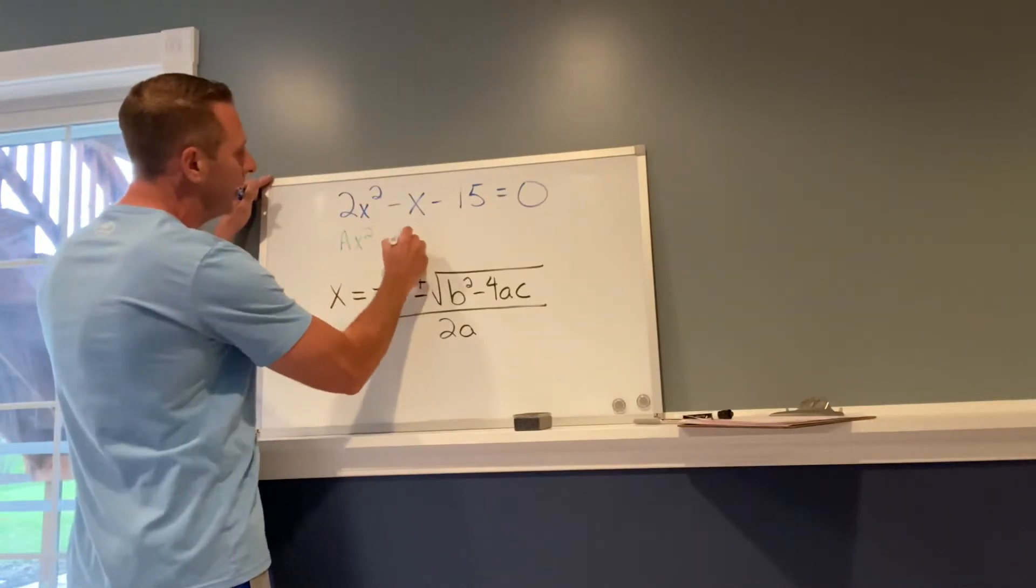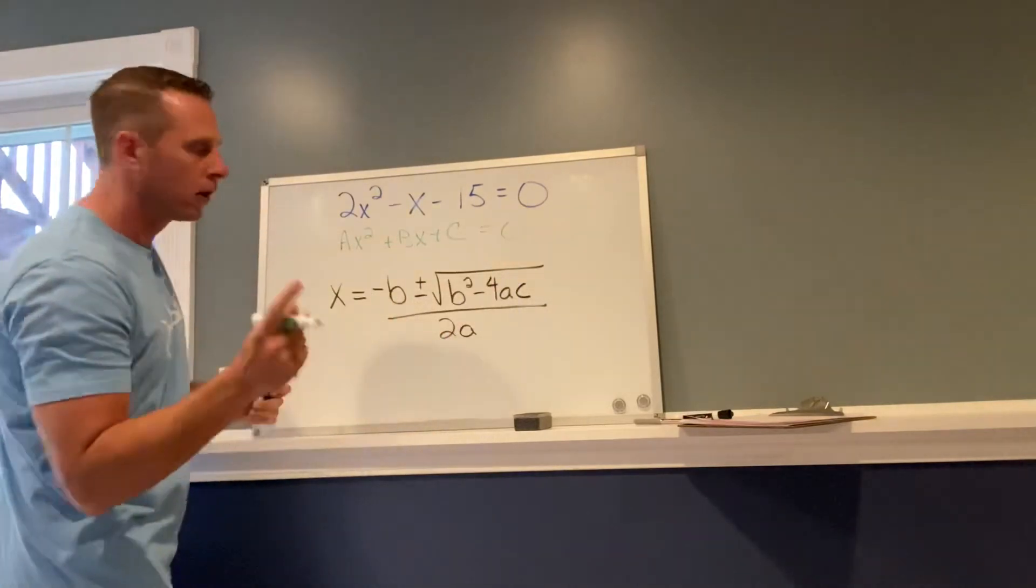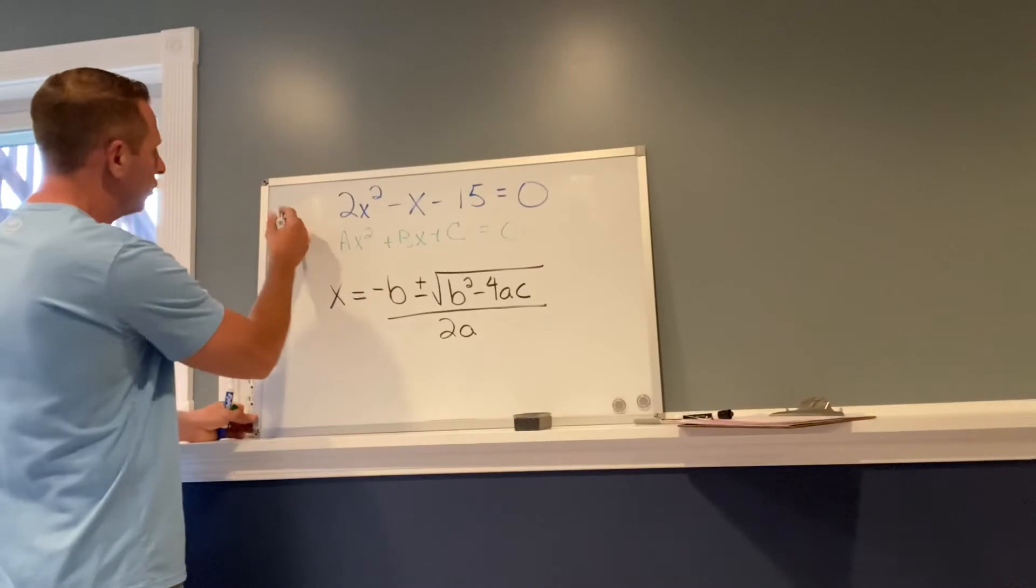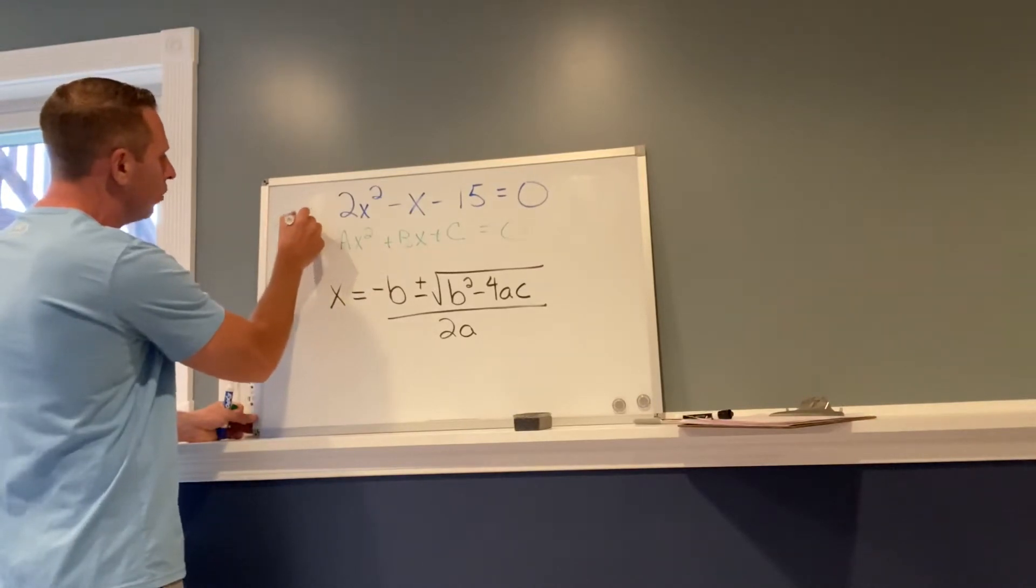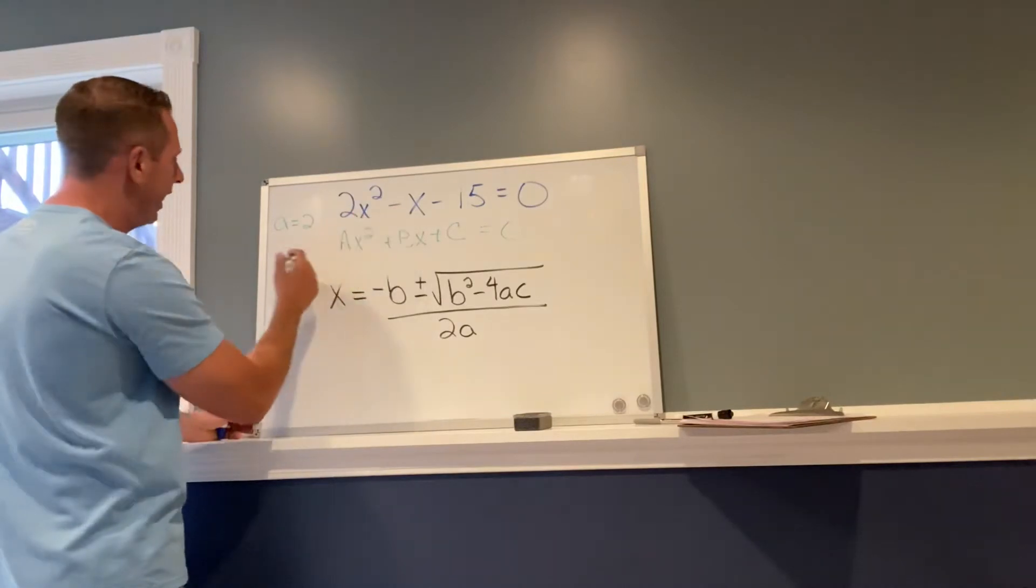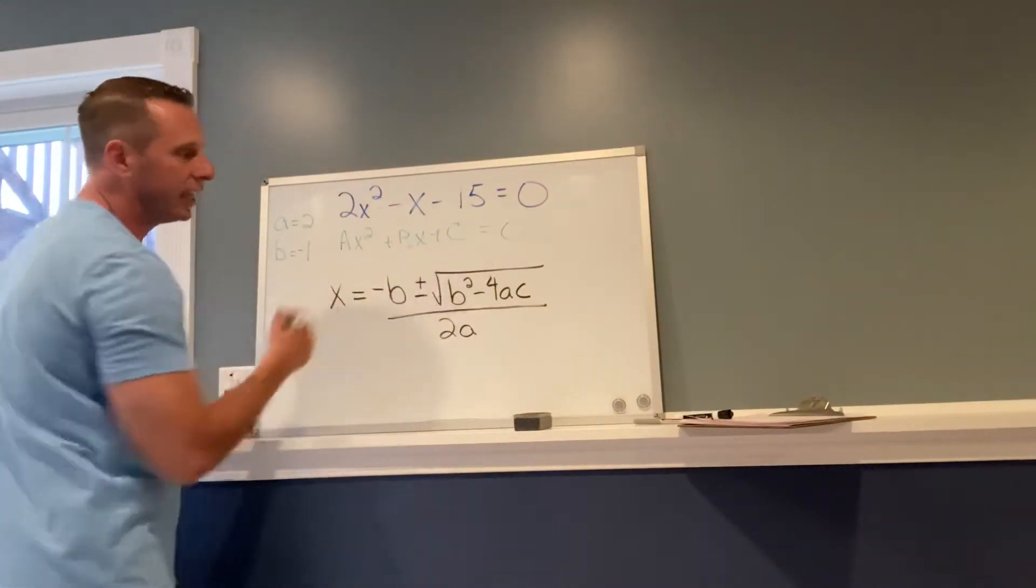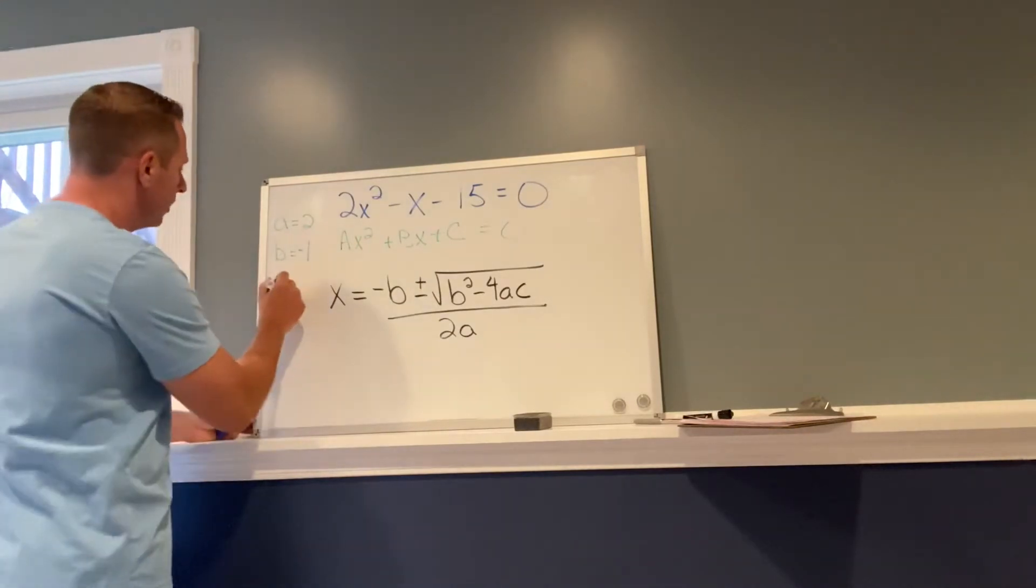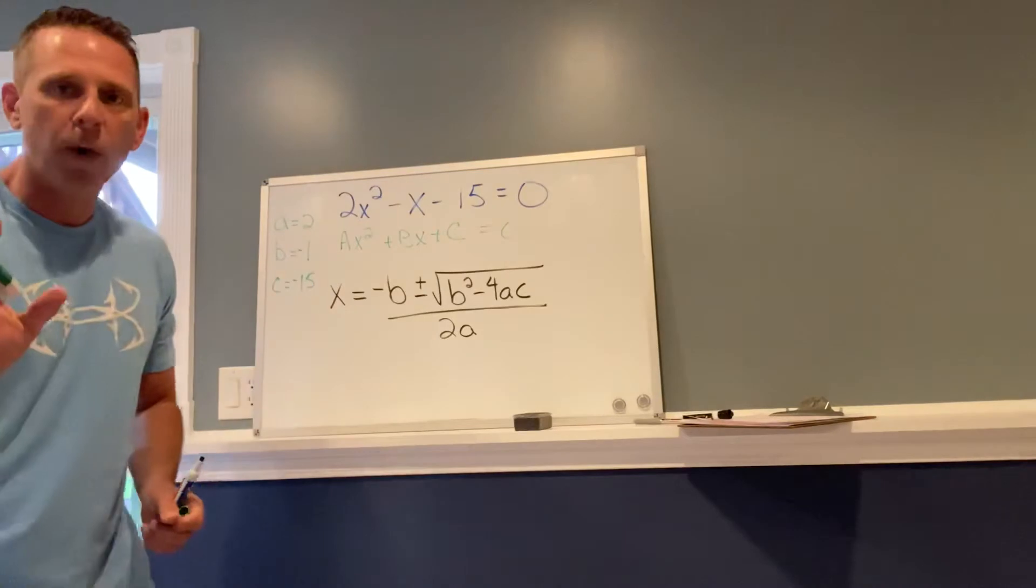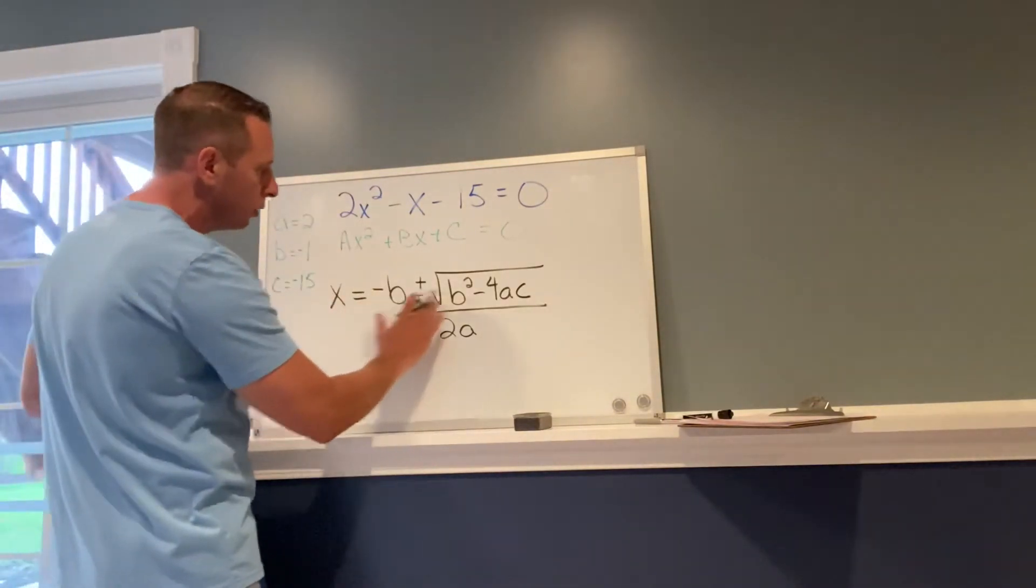If you remember how it was written before: ax² + bx + c = 0. What numbers are in place of a, the coefficient on x²? a equals 2. b is the coefficient on x, b equals negative 1. c is that constant term, so c equals negative 15. So you find out what a, b, and c are, and now we're going to substitute them into this equation.